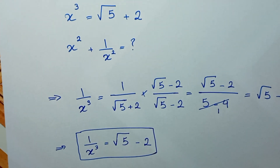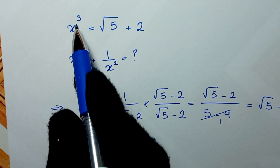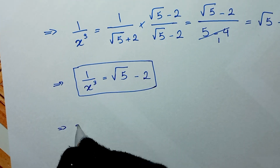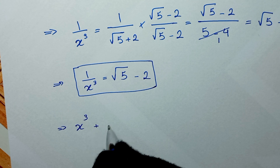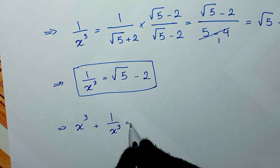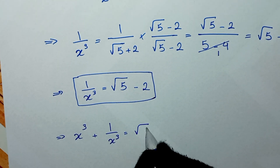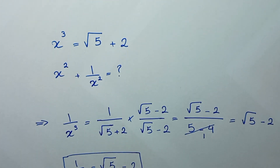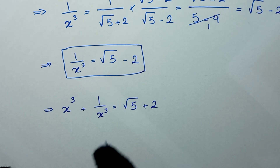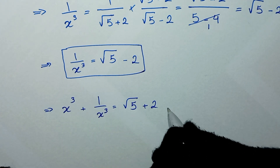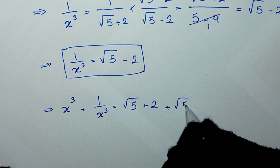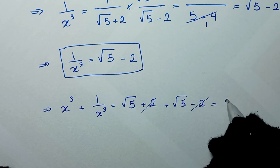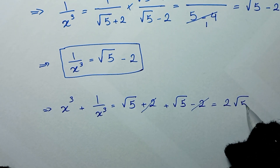From here, x cubed plus 1 over x cubed equals square root of 5 plus 2 (for x cubed) plus square root of 5 minus 2 (for 1 over x cubed). These cancel to give 2 square root of 5.